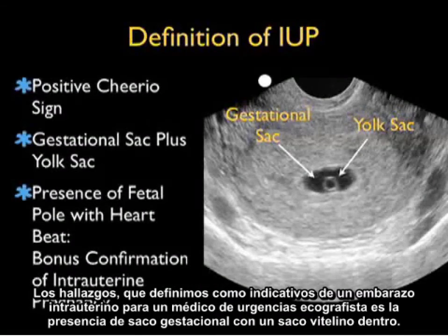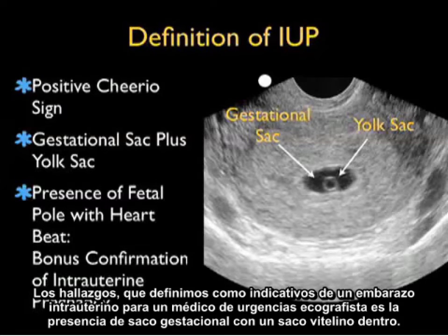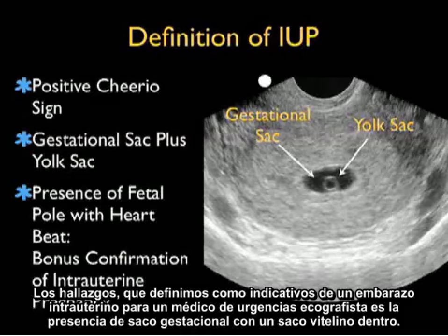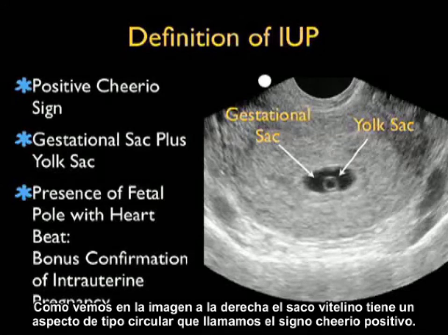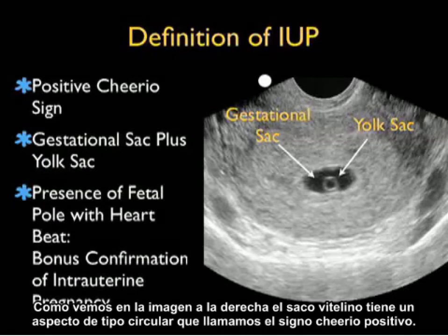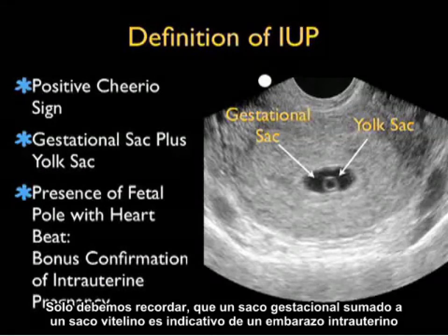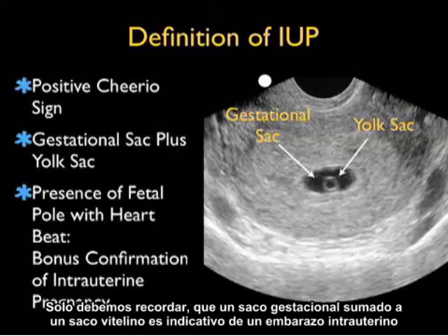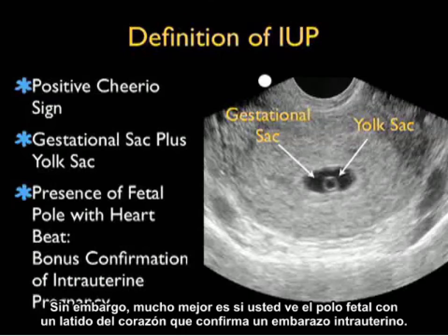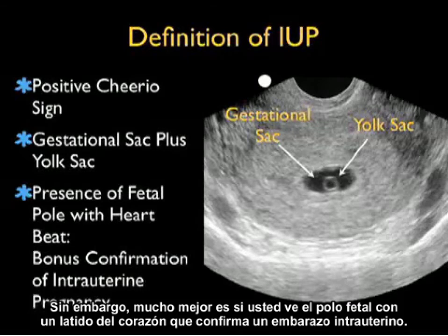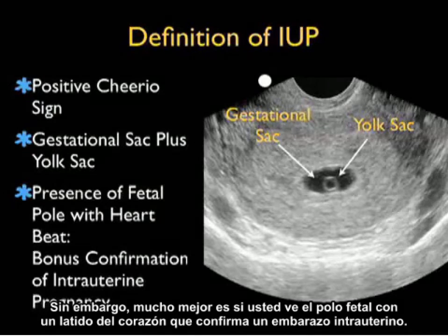The findings we define as indicative of an intrauterine pregnancy for an emergency physician sonographer are the presence of a gestational sac with a yolk sac inside. As seen in the picture, the yolk sac has a circular appearance that we call the positive cheerio sign. Remember: gestational sac plus yolk sac is indicative of intrauterine pregnancy. Bonus points are given if you also see a fetal pole with a heartbeat for confirmation.